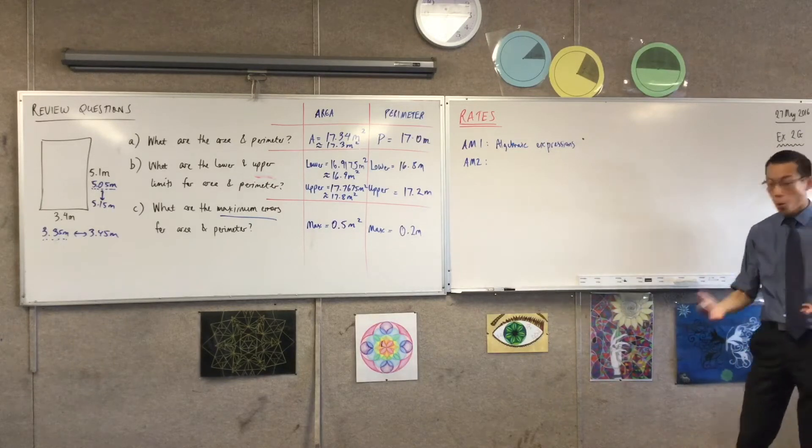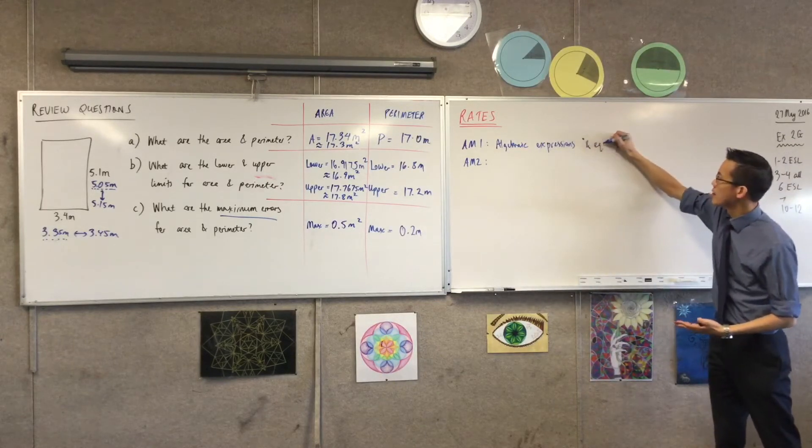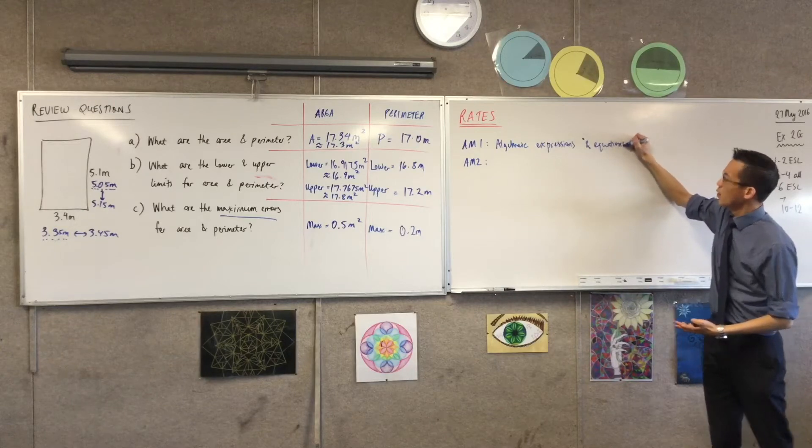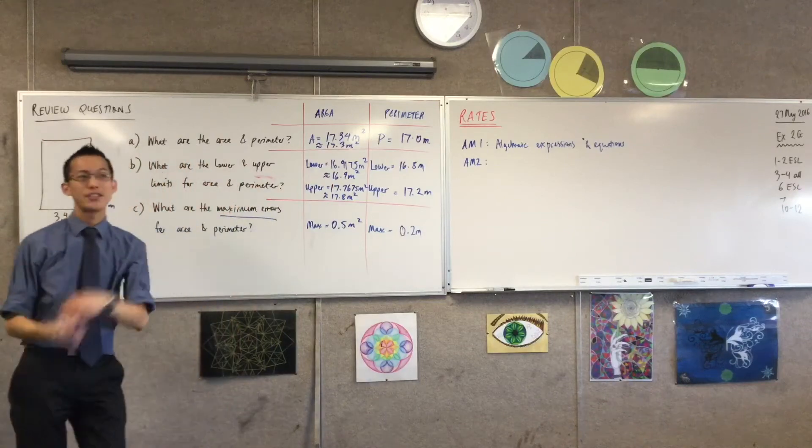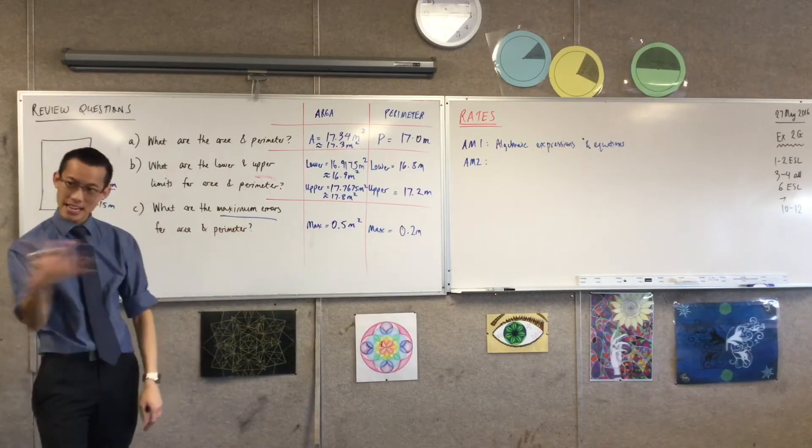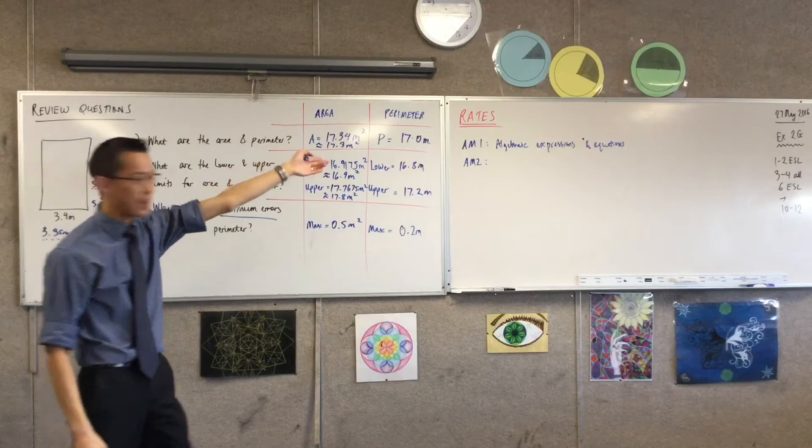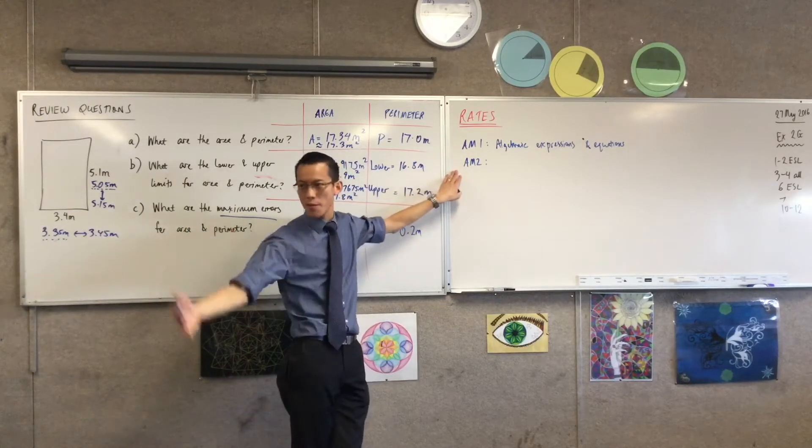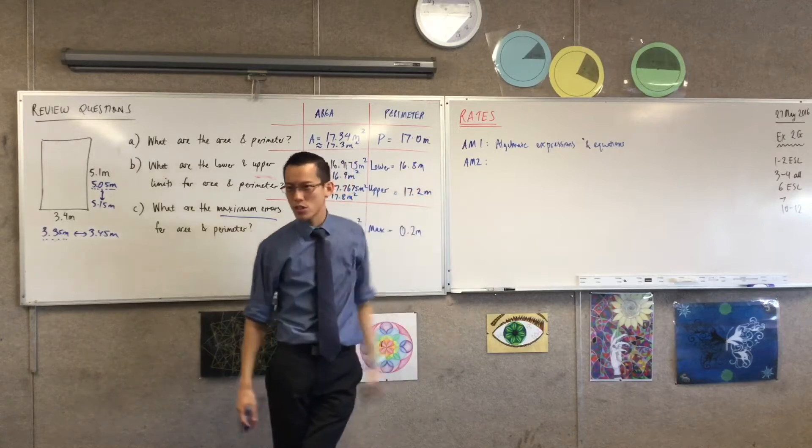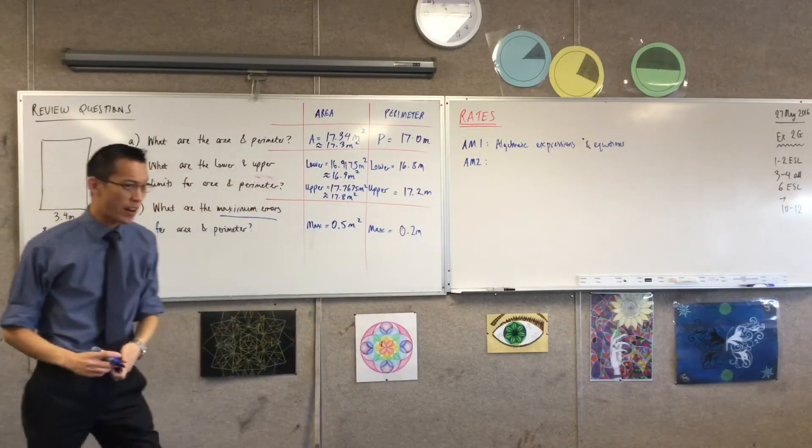But as well as that, you had equations, which is where you have an equal sign. It's not just 3x plus 5 hanging out there in the middle of nowhere. It's 3x plus 5 is equal to something. And since it's equal, that's why we call it an equation, right? That was right at the beginning of the year. And then we spent some time in finance, and then we looked at this. We had to draw some graphs. Do you remember what AM2 is about?